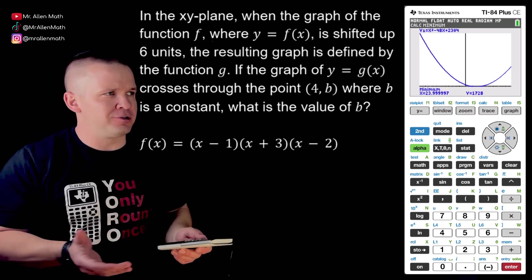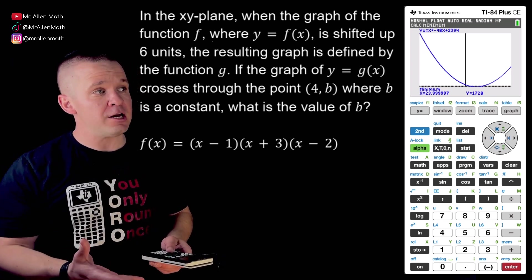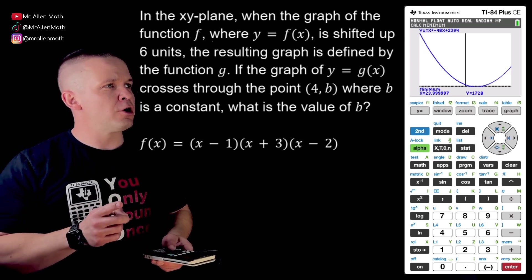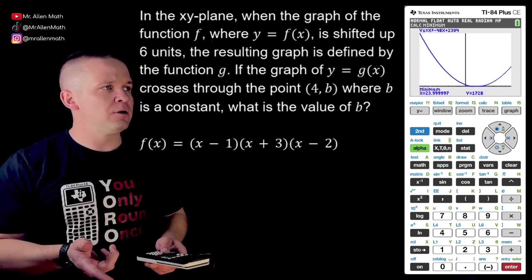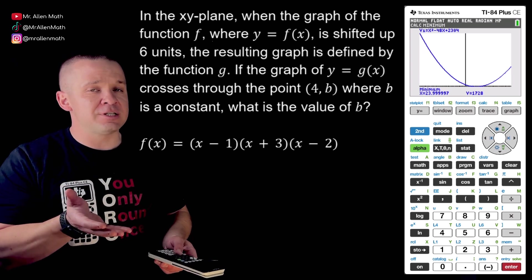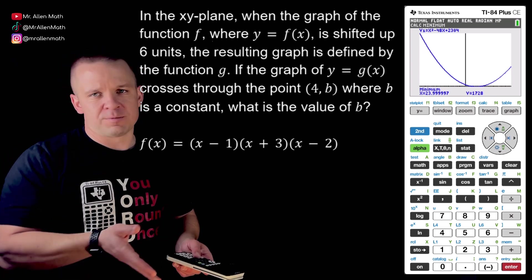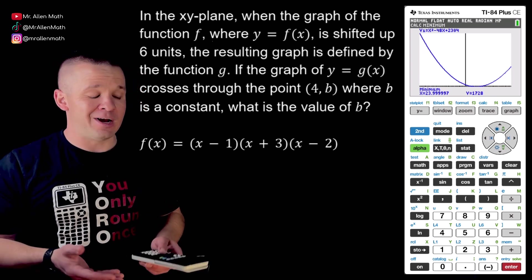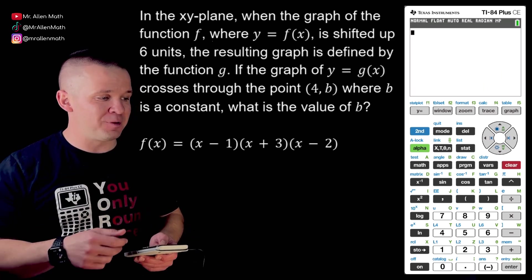So we have in the xy plane when the graph of the function f where y equals f of x - they always say y equals f of x, it's just the function - is shifted up six units. The resulting graph is defined by the function g. If the graph of y equals g of x crosses through the point four comma b where b is a constant, what is the value of b? So this all this is saying here is if I plug four in to g of x what's my y value? That's literally all it's asking. And if I'm shifting it up six units I'm just adding six to the end of my function. So here's what I'm going to do. I'm going to clear out of my graph from the last problem.